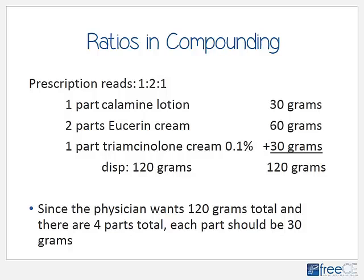We know there are 4 total parts and 120 total grams, so 120 divided by 4 tells us each part equals 30 grams. Therefore: 30 grams of calamine lotion (1 part), 60 grams of Eucerin cream (2 parts), and 30 grams of triamcinolone cream (1 part) — totaling 120 grams and 4 total parts. Does the answer make sense? Yes.